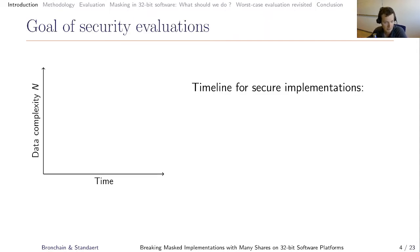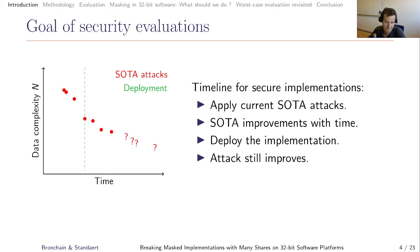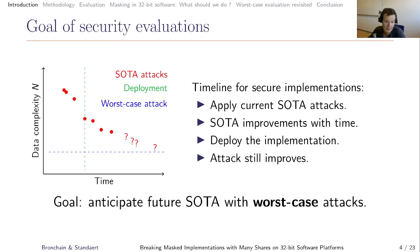This paper tackles the problem of security evaluation. Here, we will show a timeline of secure implementation where on the x-axis you have the time and on the y-axis you have the best current attack. First, when there is a product, of course, there is some attacks that we call state-of-the-art attacks or SOTA, and they improve with time. The best attack complexity decreases with time. And at some point, one has to deploy the implementation and say, it's in the wild, I cannot touch it anymore. And at that time, you would like to know what's the current resistance of your target. But with time, attack still improves.